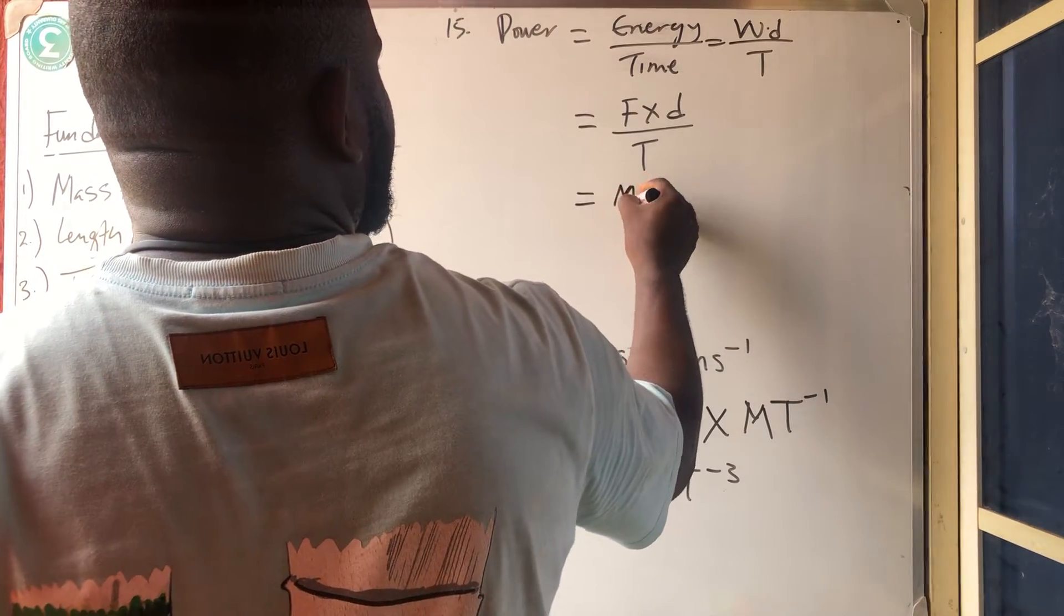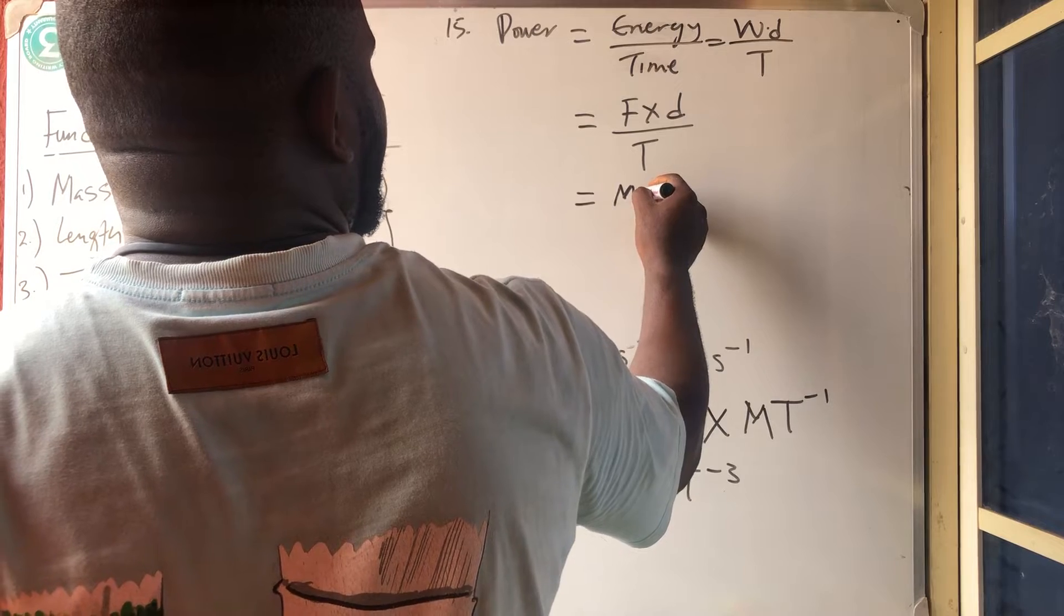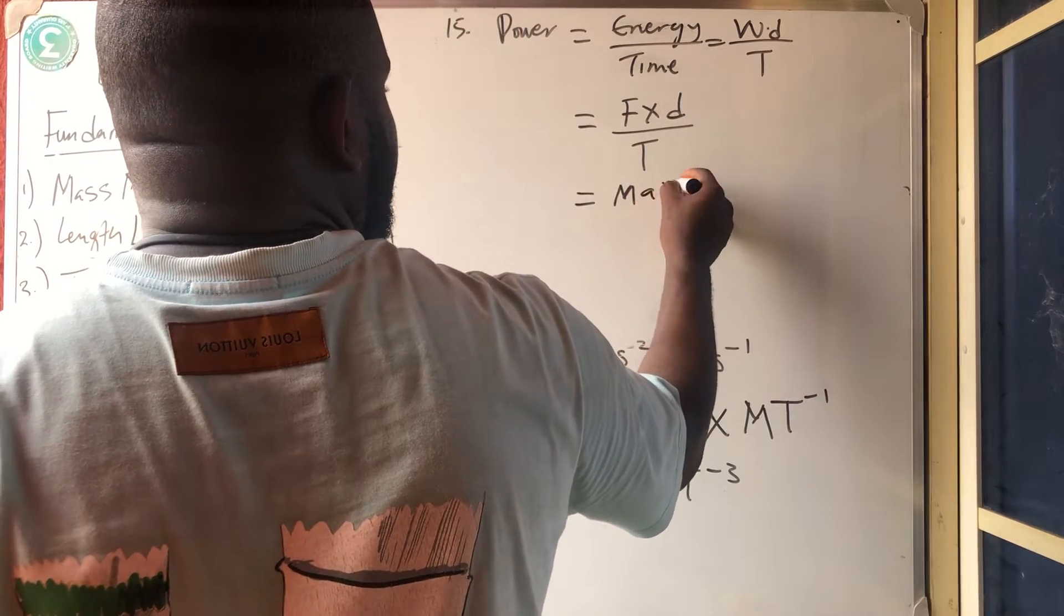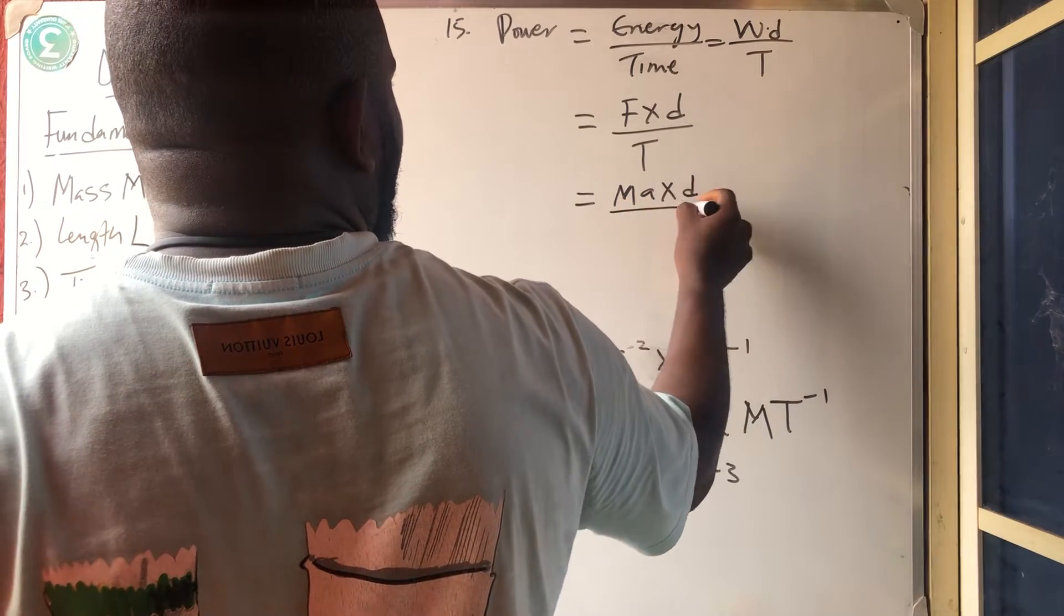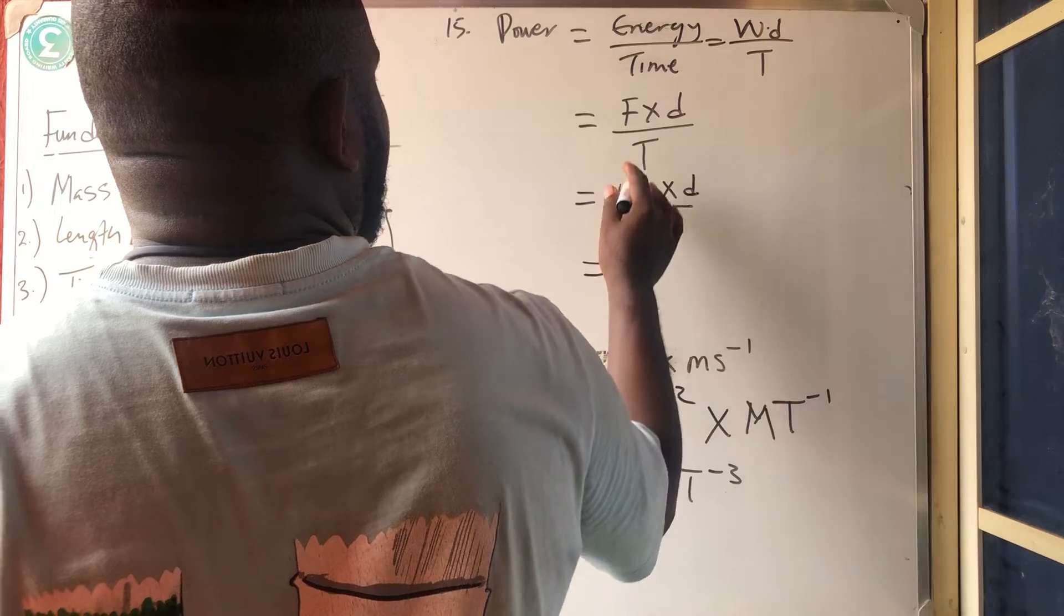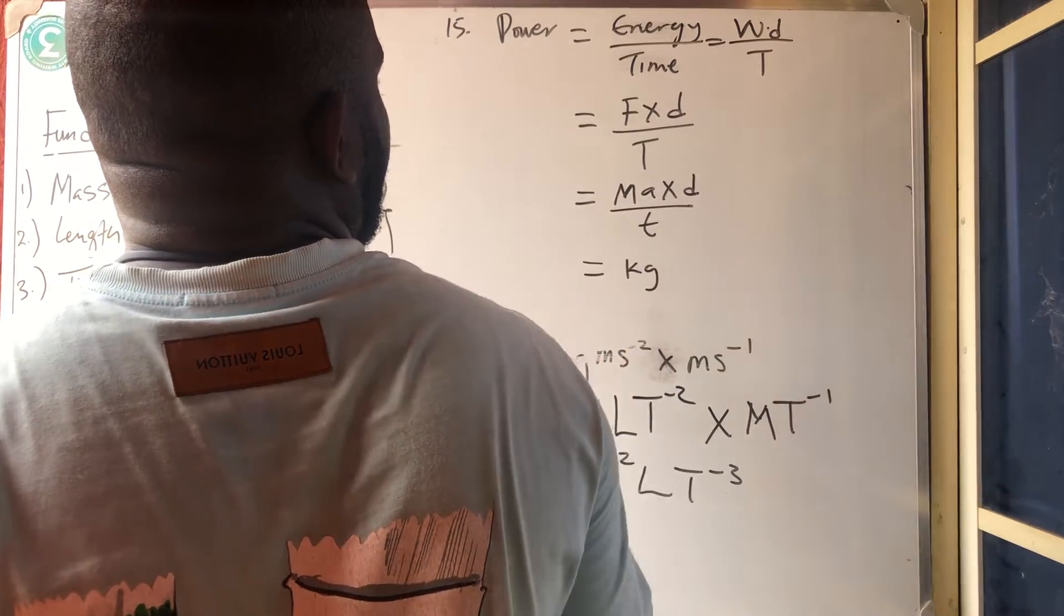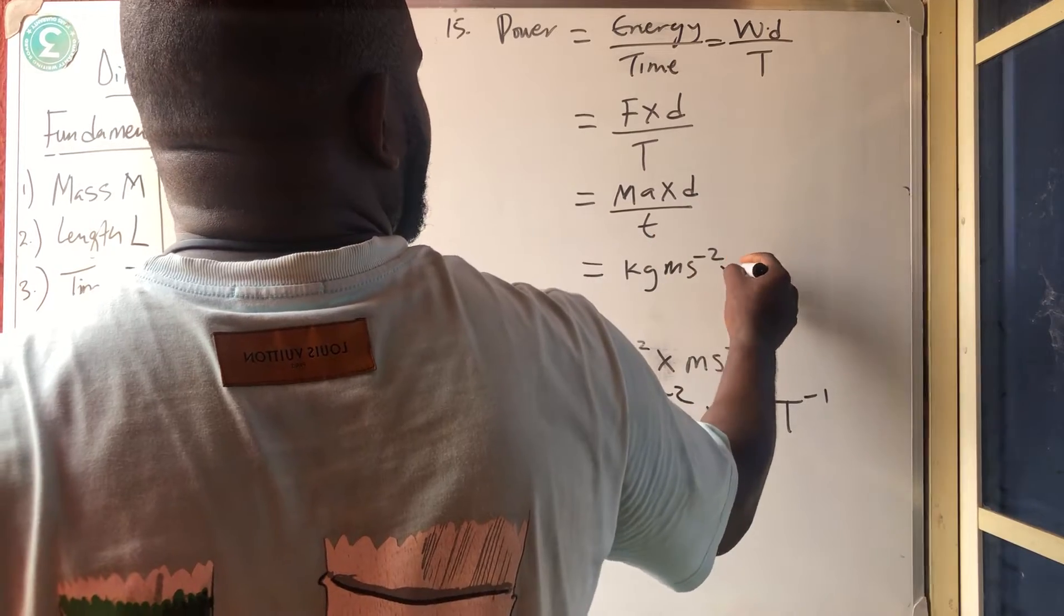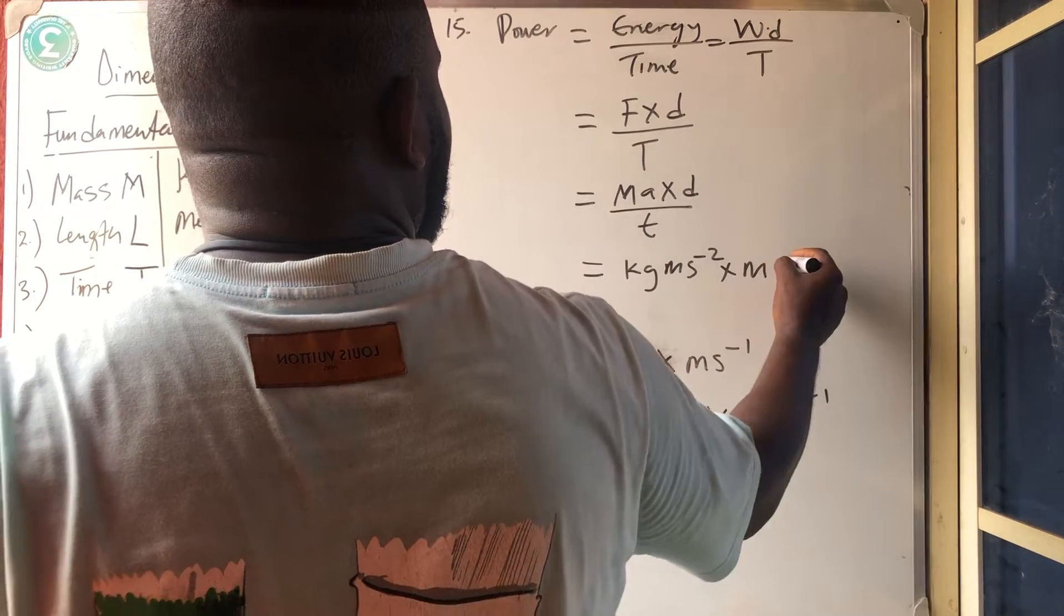And don't forget what is our force. Our force is meter, meter per, sorry. Mass times acceleration times the distance all over what? All over the time. So let us get it now. Mass is kilogram. Acceleration is meter per second square. Distance is another meter. And time is what?